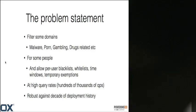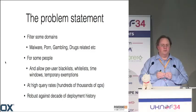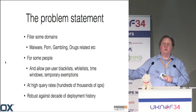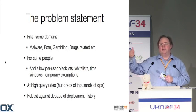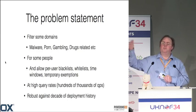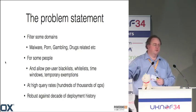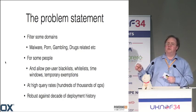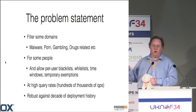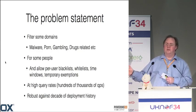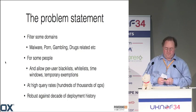Maybe you want a watershed — say 9pm, after which filtering goes off because you want to use the internet. You want to do this at high query rates, because a typical big service provider hits around one to two million queries per second of legitimate traffic. And you need to be robust against what I call a decade of deployment history, where people are still using nameserver IP addresses from five acquisitions ago.